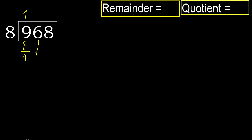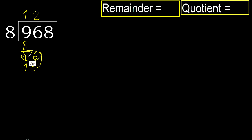Bring down the next digit: 16. 8 multiplied by 2 is 16 — 16 is not greater. Subtract next.